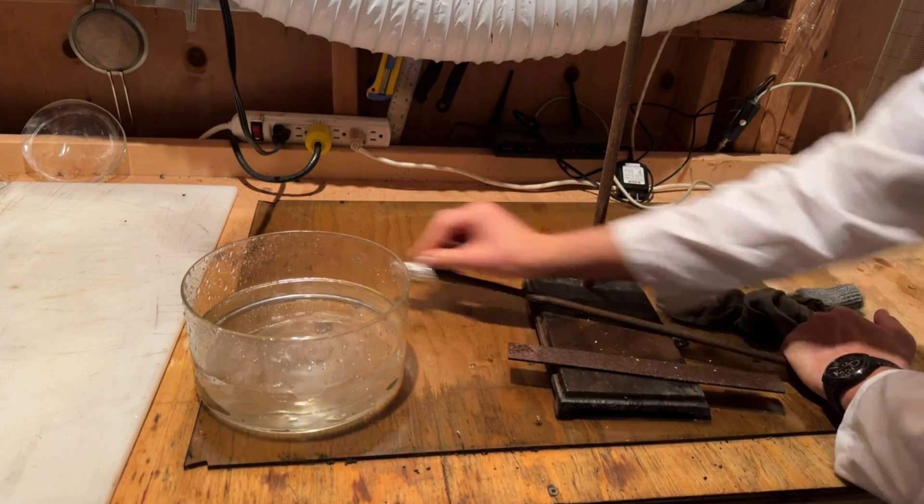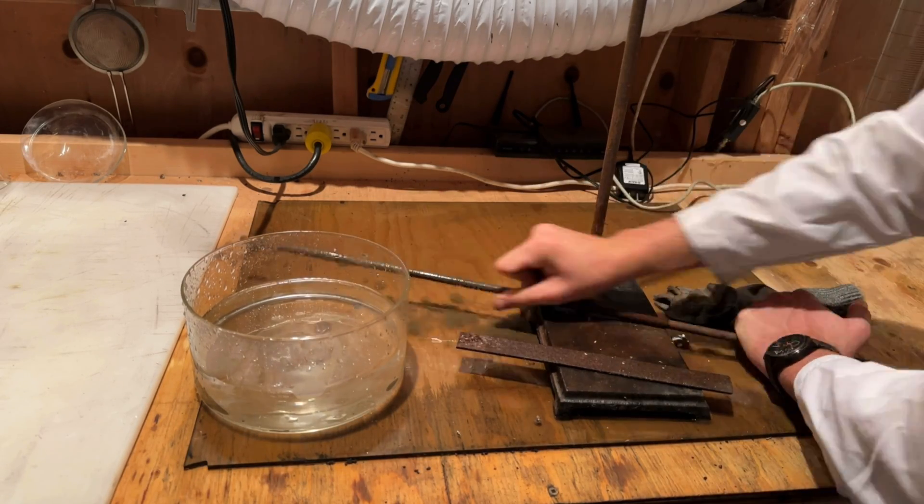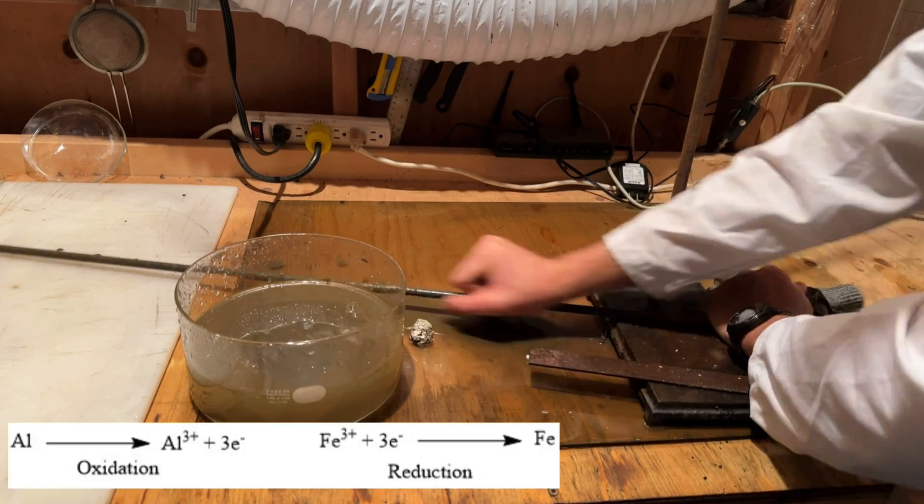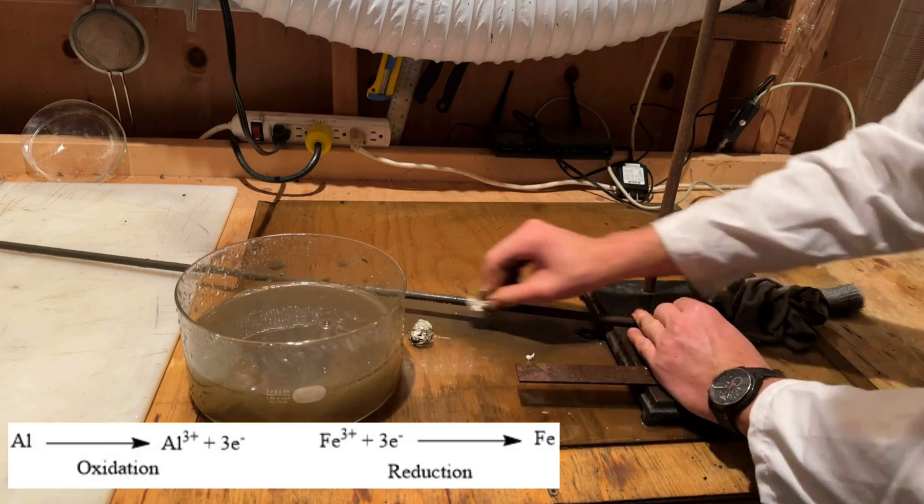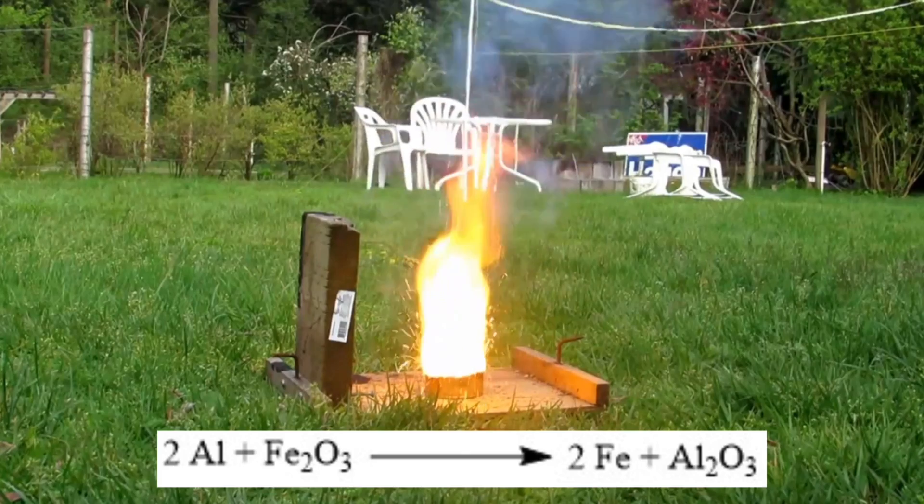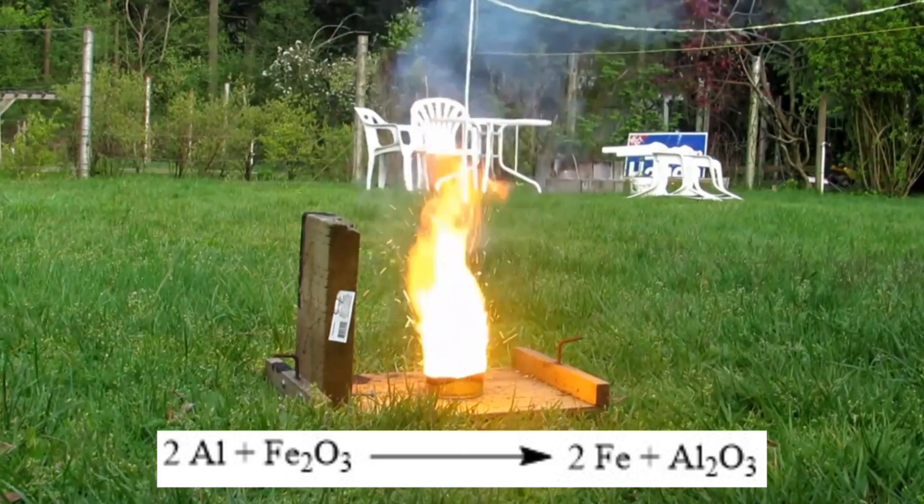Aluminum is much more reactive than iron and so when the aluminum foil is rubbed on the iron oxide a redox reaction actually occurs where the iron oxide is reduced back to elemental iron and the aluminum is oxidized. This is the same reaction as the classic thermite reaction, however in this case it is not self-sustaining.